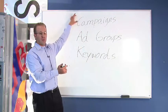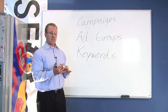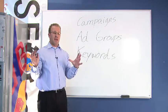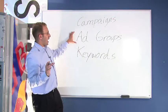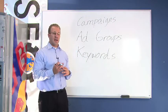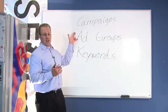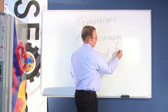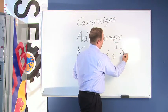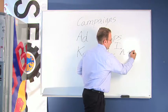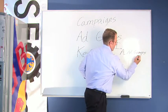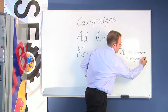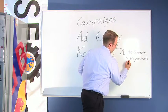At the campaign level, you'll be able to set time characteristics, geographic targeting, and name the theme of your actual campaign. Within your ad group level, you're going to identify the structure of your campaign. If you're looking at it from an outline, you have your Roman numeral I, then you go into a capital A, which would be your ad groups. From your ad groups, these are going to house your keywords and also your ad copy.